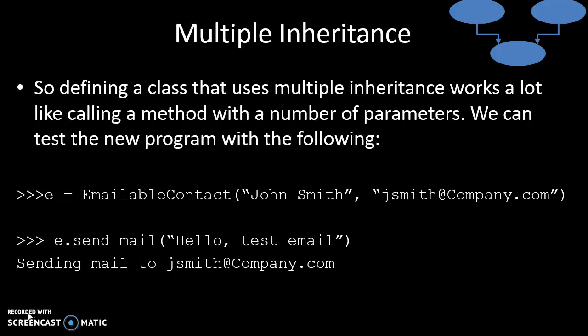So if we wanted to run that emailable contact program, we could declare a variable of type EmailableContact called E, passing in parameters johnsmith and jsmith.company.com. And then if we did E dot send_mail — boom — we're sending a message to that person.